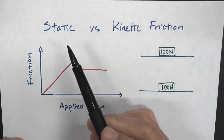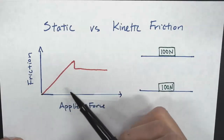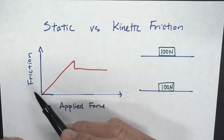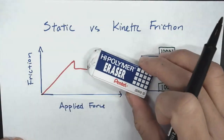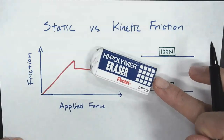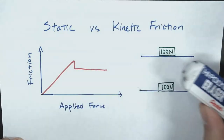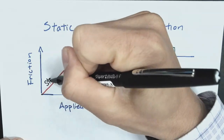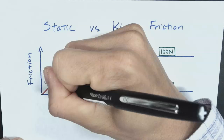In this video, we're going to look at the difference between static versus kinetic friction. Here we have a graph, and this graph has applied force and friction on it. So imagine you have this eraser here, and I am pushing on it. As I push on it, initially it's not moving. If I push it hard enough, then it starts to move. So when I am pushing on it and it's not moving, we call this static friction.